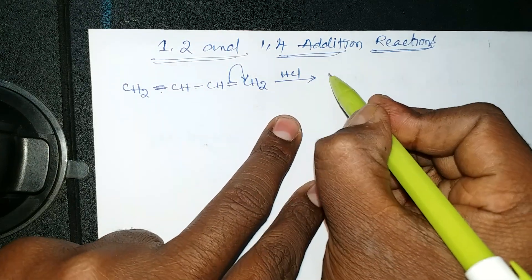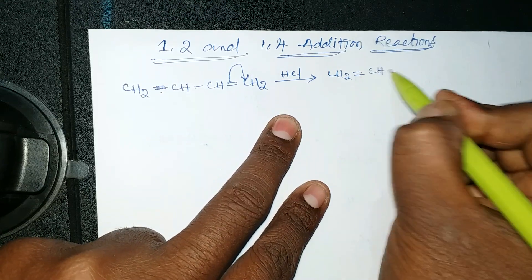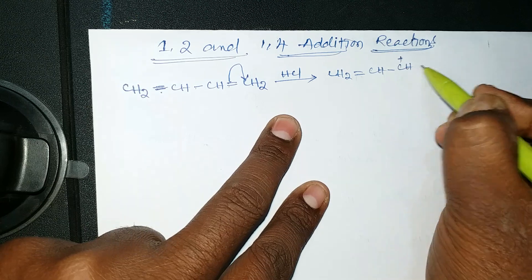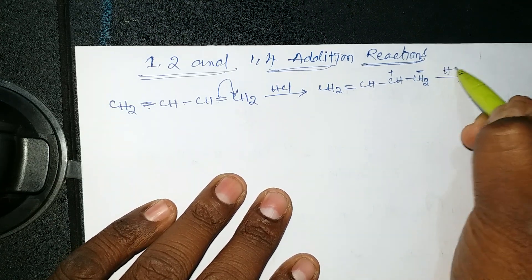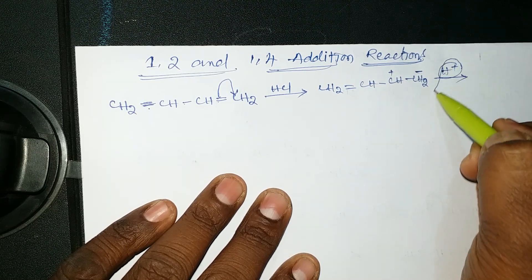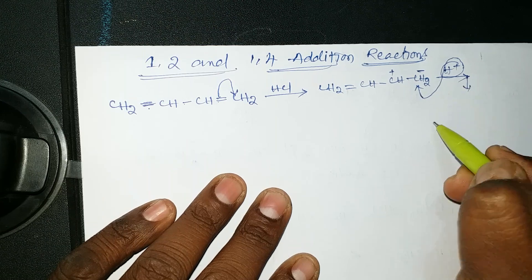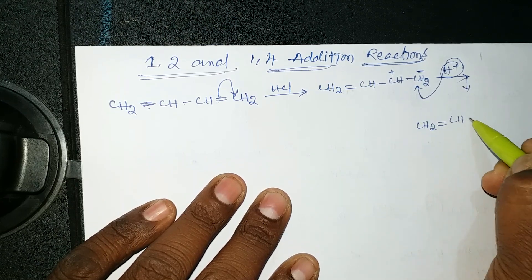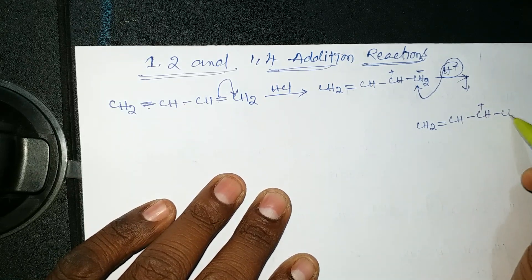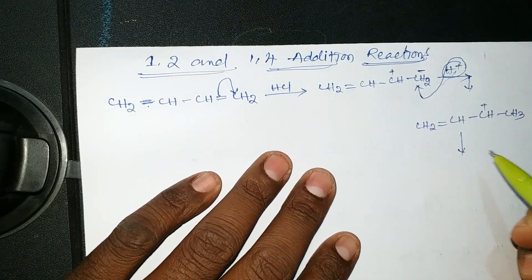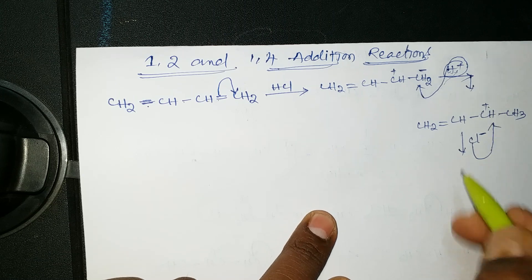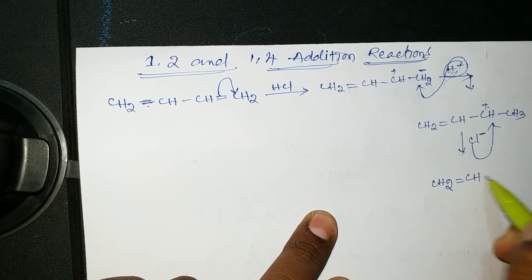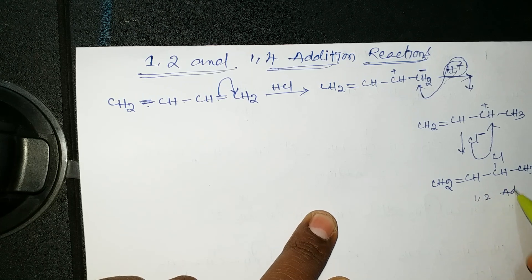In the first case, the bond shifts towards the right-hand side, giving us CH2=CH–CH⁺–CH2⁻. The electrophile attacks first — this electrophile attacks the CH2⁻ position. We get CH2=CH–CH⁺–CH3. After that, Cl⁻ attacks the positive side, giving us CH2=CH–CHCl–CH3. This is the 1,2 addition reaction product.